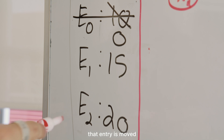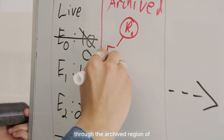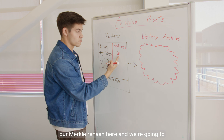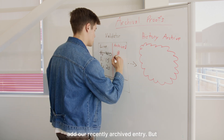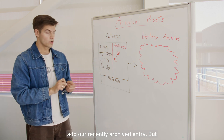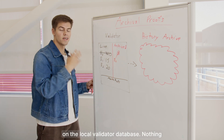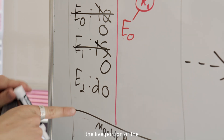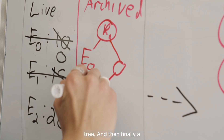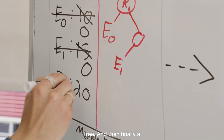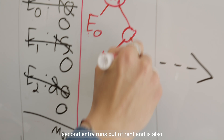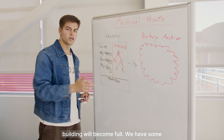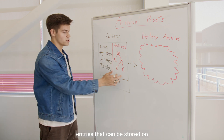What happens is that entry is moved to the archived region of the validator. This archived region is a Merkle tree. We have our Merkle root hash, and we are going to add our recently archived entry. Remember, this is still on the local validator database — nothing has actually been deleted yet. Some more time goes on, and our second entry will eventually go to zero, be removed from the live portion of the database, and again added to our Merkle tree. Finally, a few more ledgers pass, and the third entry runs out of rent and is also archived. At a certain point, the Merkle tree we're building will become full — we have some maximum amount of archived entries that can be stored on disk at any given time.